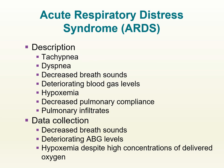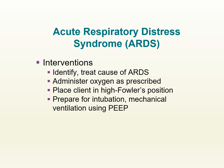For ARDS, interventions include identifying and treating the cause, administering oxygen as prescribed, placing the client in high Fowler's position, and preparing for intubation or mechanical ventilation using PEEP. In asthma, there is chronic inflammation of the airways. Patients have absent or diminished breath sounds due to constriction limiting airflow. They use accessory muscles, have nasal flaring, retractions, prolonged exhalation, and decreased O2 saturation. Ensure the airway is patent, give humidified oxygen when possible, and administer quick-relief rescue medications such as short-acting beta-2 agonists and corticosteroids. Monitor respiratory status continuously. Remember: beta-1 is for the heart and we have one heart; beta-2 is for the lungs and we have two lungs.